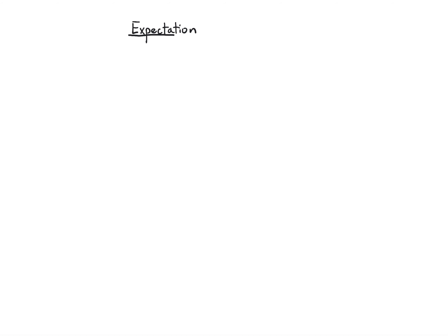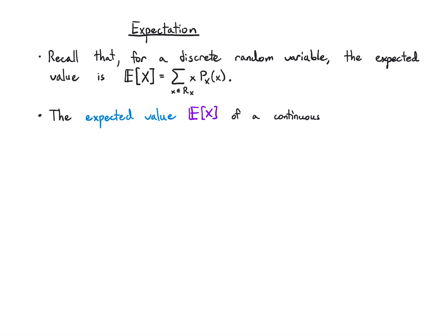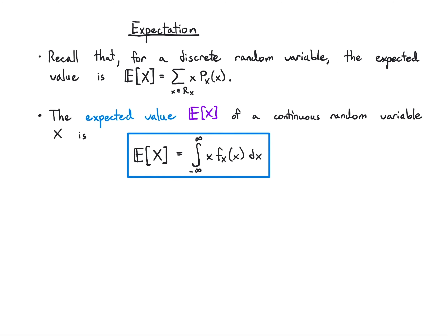Let's bring the notion of expectation to continuous random variables. For a discrete random variable, we define the expected value to be the weighted sum of x according to the PMF value — the sum of x times the PMF over the range of x. For a continuous random variable, we replace sums with integrals. So the expected value is the integral from minus infinity to infinity of x times the PDF of x, and the range is just the whole real line.